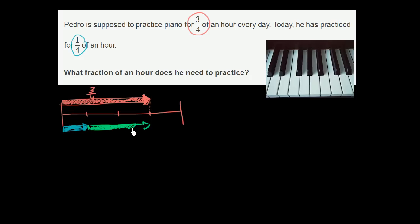This is how much he needs to go. How much does he need to practice? He needs to do a total of 3 fourths. He's already done 1 fourth. So if you subtract 1 fourth from the 3 fourths, you're going to get this amount right over here. You're going to get the amount that he needs to practice.